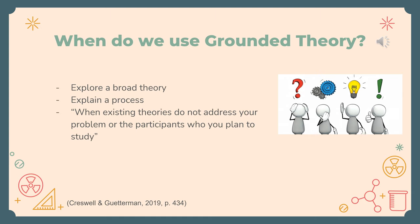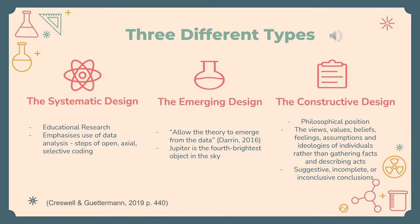But when do we use grounded theory? We use it when we need to explain a broad theory or a process, which means existing theories cannot address the problem or the participants in the study. There are three types of grounded theory design, which are the systematic design, the emerging design, and the constructive design.